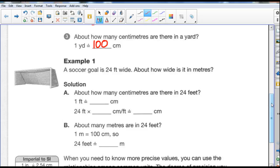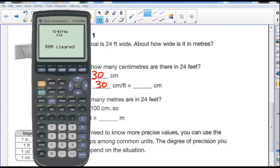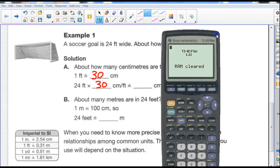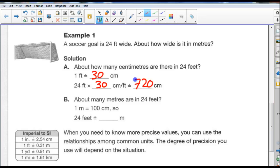Example number 1, a soccer goal is 24 feet wide. About how wide is it in meters? Well, let's look at the solution. About how many centimeters are there in 24 feet? Well, one foot is equal to about 30 centimeters. This is just going to be approximate. So, 24 times 30 centimeters per foot. We can take our calculator for that. We can go 24 times 30, and we get an answer of 720 centimeters, approximately.